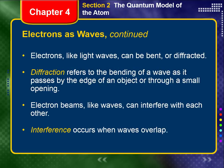So electrons like waves — because we're thinking of electrons like waves — the electrons can be bent. The academic language for that is diffracted. Diffraction refers to the bending of a wave as it passes by the edge of an object or through a small opening. Also, electrons, like waves, can interfere with each other. To interfere with one another is something that waves do as they come into contact with one another. Interference is a wave characteristic — interference occurs when waves overlap.